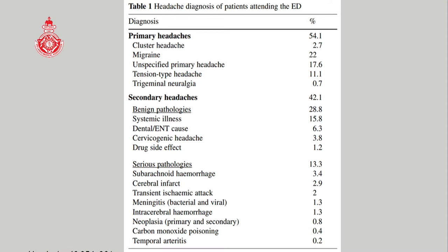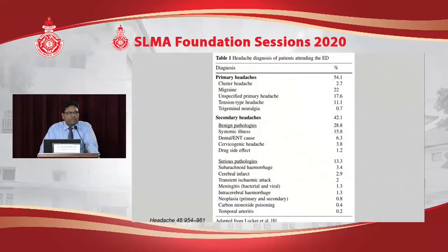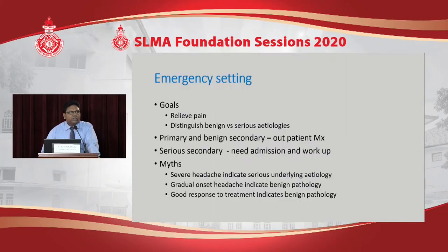Data from a cross-section of emergency patients shows most are primary headaches — about 54 percent — with a significant group of secondary headaches, including both benign and serious pathologies. The cross-section varies by hospital, but typically 50 to 80 or 90 percent are primary. Primary and benign secondary headaches are referred to the OPD, while serious pathologies need further workup and immediate action.